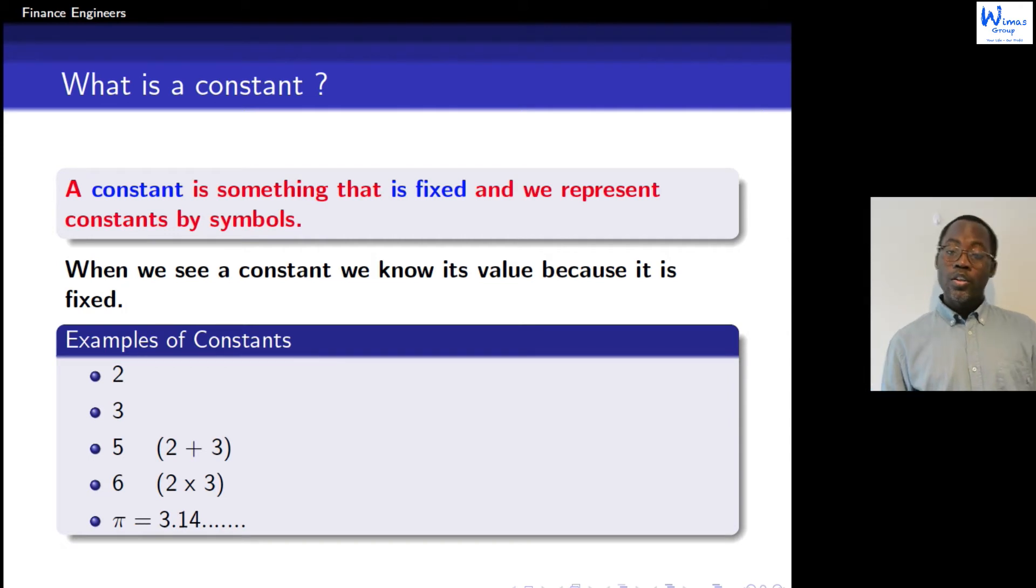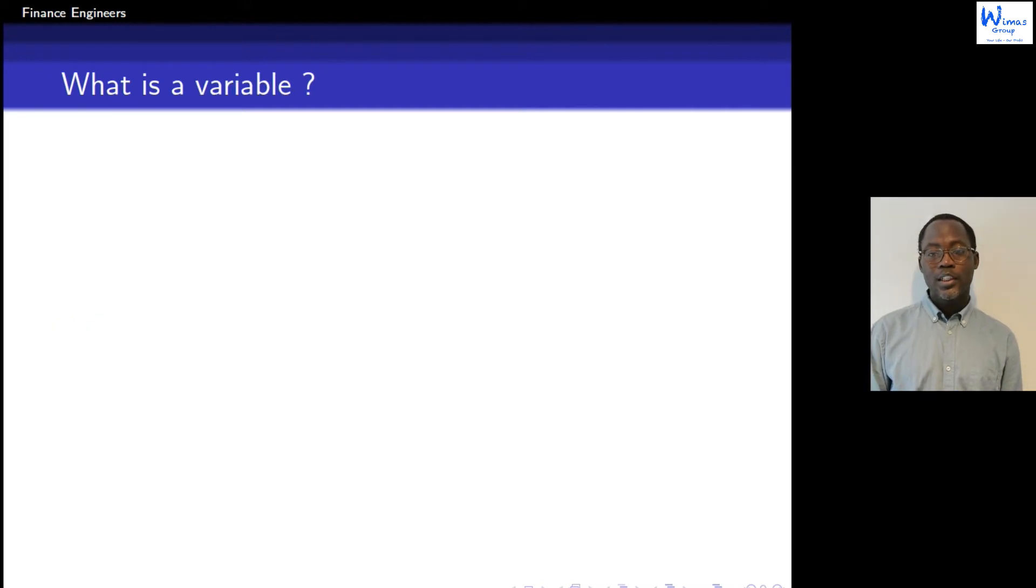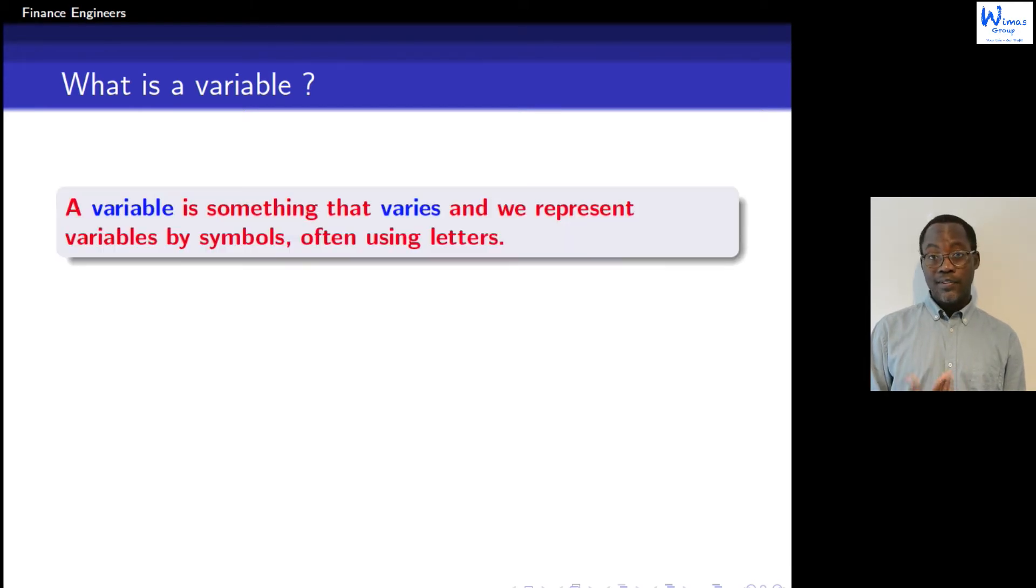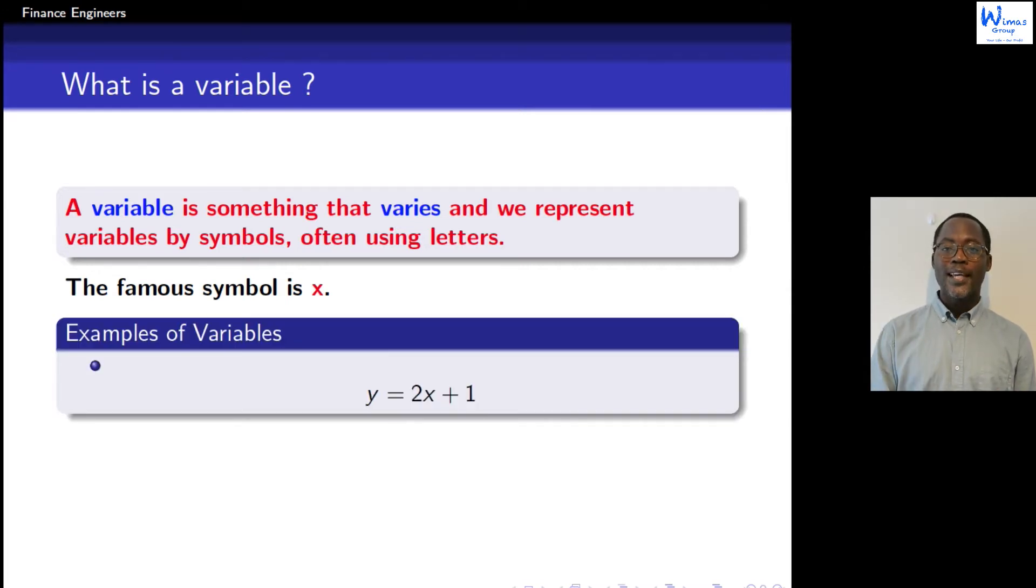I hope you understand now what is a constant. Now let's jump to the second question: what is a variable? A variable is something that varies. We also use symbols to represent variables. As many of you know, the famous symbol is x. If we write an expression like y equals 2x plus 1.